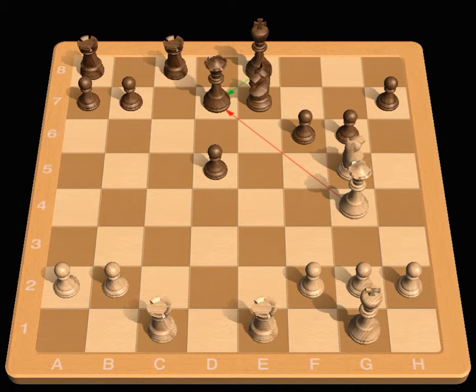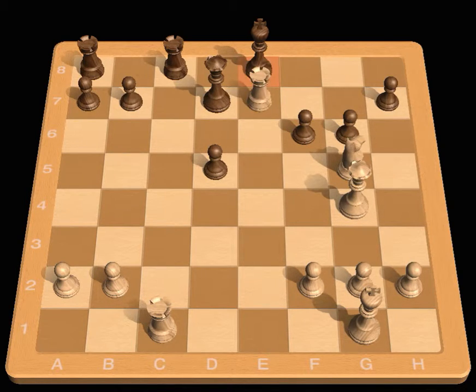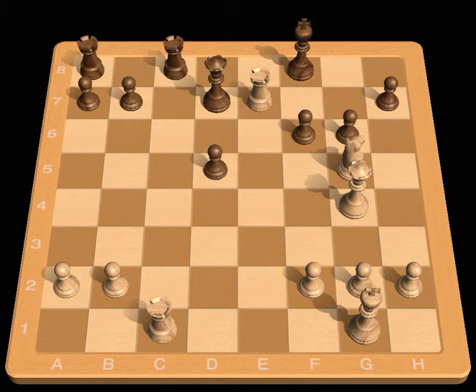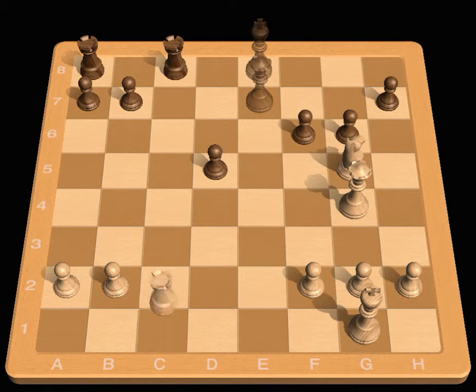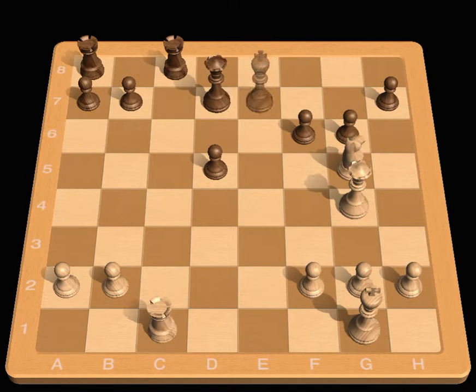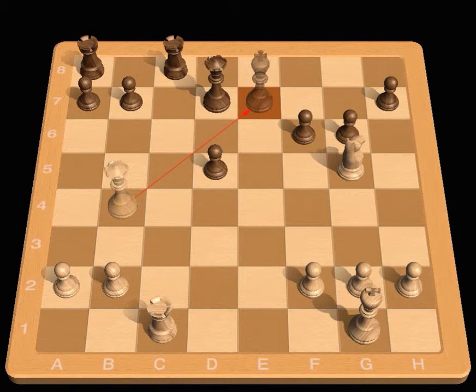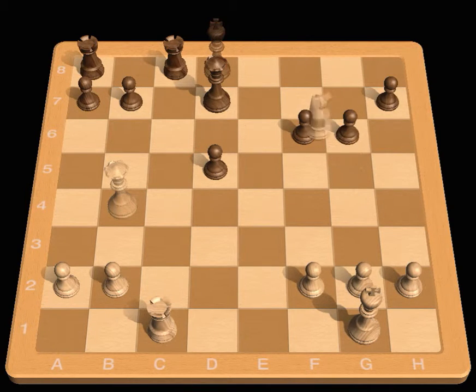Knight g5 check, King e8. Black must play this or lose his Queen. Rook takes e7 check, King f8. What happens if he takes the Rook? Well, let's see. If Queen takes e7, Rook takes c8 check wins a piece. If King takes e7, White wins with Queen b4 check, King d8, Knight e6 check, either winning a Queen or mating.